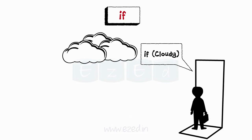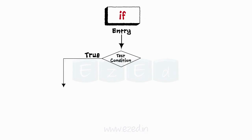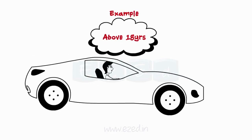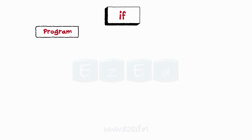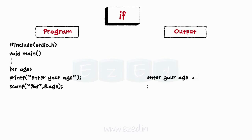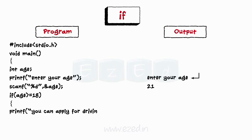Moving on to the first flow control statement: if. The if statement handles one-way decisions and determines whether to do something based on a condition. If the test condition evaluates to true, the corresponding block is executed; else control goes to the next executable statement. For example, only people above the age of 18 are allowed to drive. We declare the main function with variable age, ask the person to enter their age, then use an if statement to check if age is above 18. If yes, we print that the person should be given a driving license.